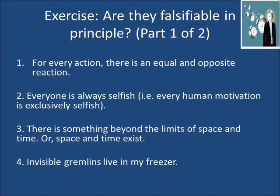Number three says: there's something beyond the limits of space and time, or that space and time exist. This seems to be unfalsifiable as well, because something outside of space and time cannot be observed and would make no difference to space and time. Everything would be the same regardless of whether the first statement is true or false. The same holds arguably for the second statement, because even if there were no space and time, people can't help but live as if there is. Another way to get at this is to argue that observation presupposes space, so one cannot prove space exists through observation.